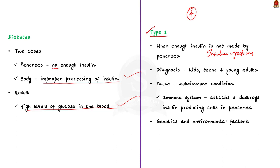It is caused by an autoimmune condition. This means the immune system attacks and destroys the cells that produce insulin in the pancreas. Other factors that cause type 1 diabetes include genetics and environmental factors.